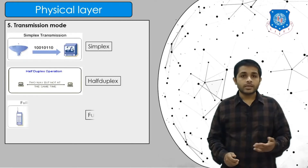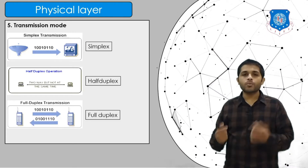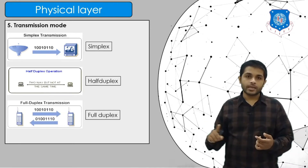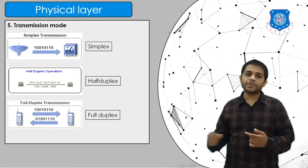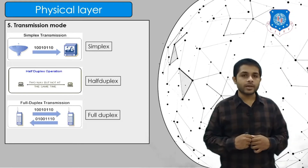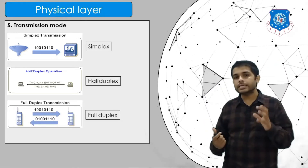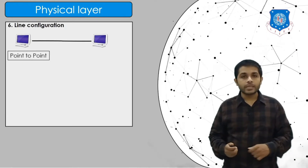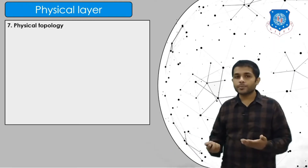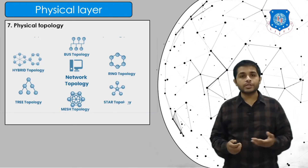There are three types of transmission mode: simplex, half duplex, and full duplex. Simplex means one-way communication. Half duplex means only one device can send or receive data at a time. Full duplex means two devices can send and receive data simultaneously — an example is mobile communication. An example of half duplex is a walkie-talkie. An example of simplex is your TV, which receives data from a television tower but cannot send data back. There is also line configuration — point-to-point and point-to-multipoint — and different topologies such as bus, ring, mesh, star, and hybrid topology.